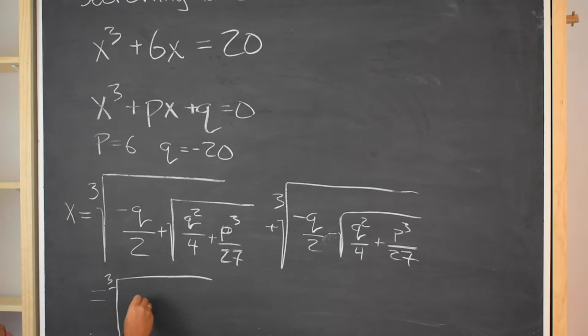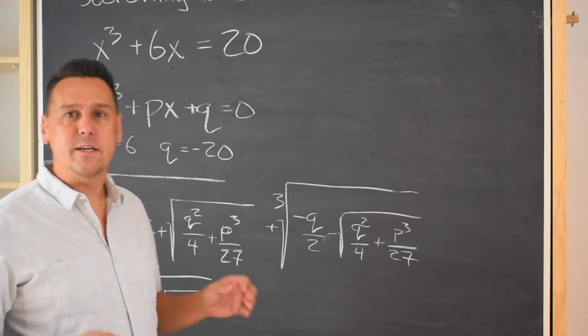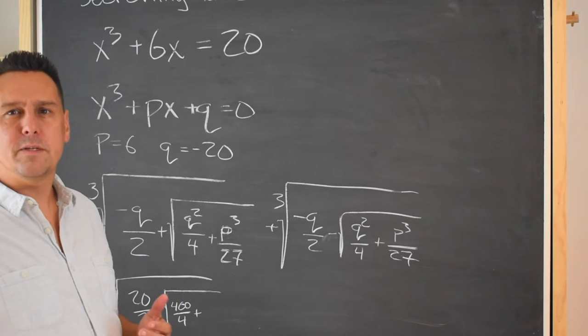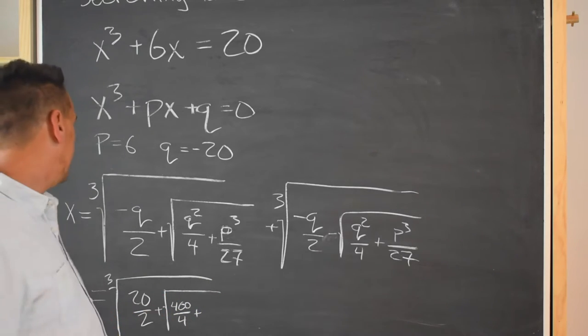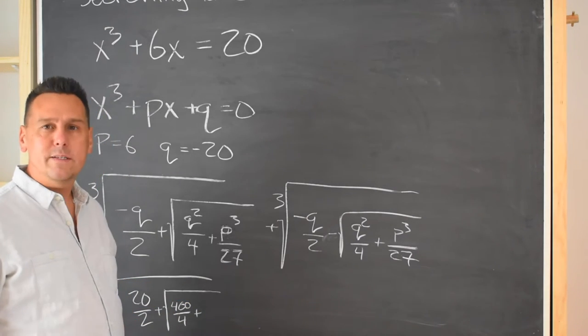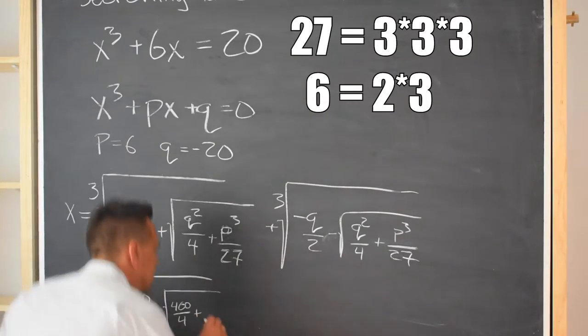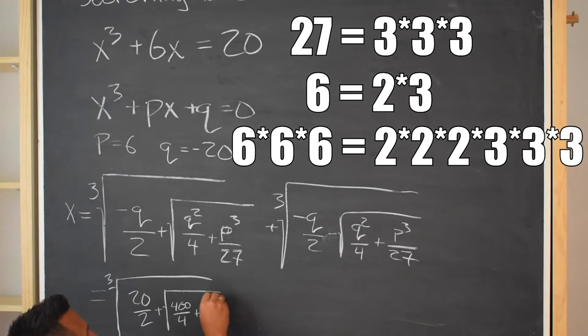Wikipedia says that x is going to equal the cube root of negative q over 2, plus the square root of q squared over 4 plus p cubed over 27. And then I got to pretty much do that whole thing all over again, except a little bit different. So the cube root of minus q over 2, minus the square root of q squared over 4 plus p cubed over 27.